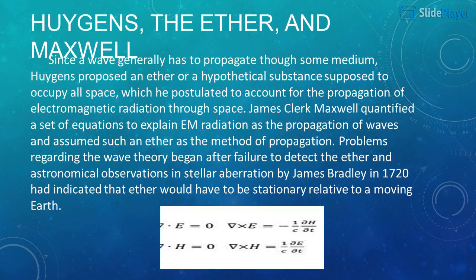James Clerk Maxwell quantified a set of equations to explain electromagnetic radiation as the propagation of waves, and assumed such an ether as the method of propagation. Problems regarding the wave theory began after failure to detect the ether, and astronomical observations of stellar aberration by James Bradley in 1720 had indicated that ether would have to be stationary relative to a moving Earth.